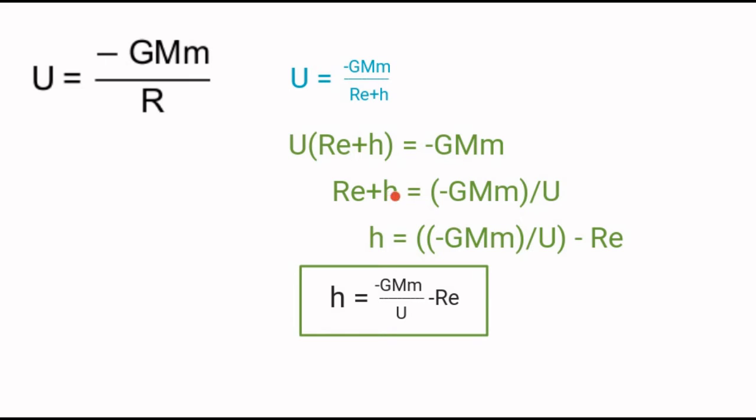Now we have the radius of the Earth plus the altitude equals the product of this divided by the potential energy. Then we need to move the radius of the Earth to the other side by subtracting it from both sides, giving us h equals negative GMm over U minus Re.